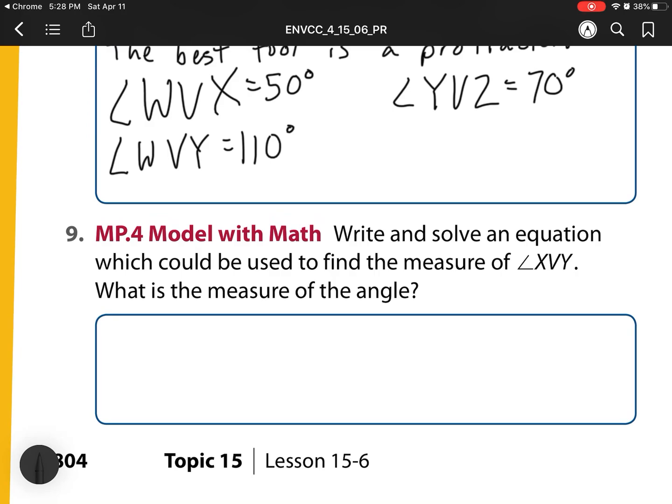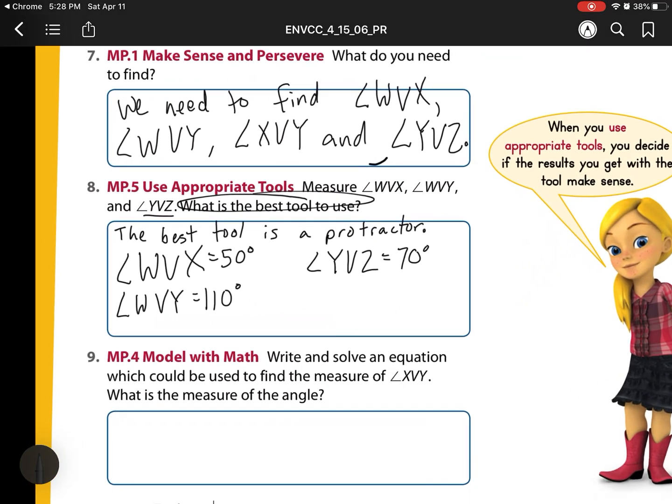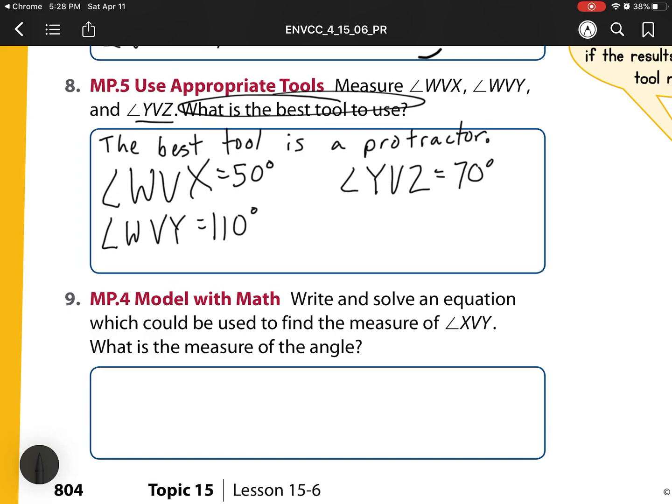Write and solve an equation which could be used to find the measure of XVY. So that's this angle right here, XVY. What is that missing angle? What is the measure of the angle? Well, we can use D for our variable for degrees, or we can use A for angle. I'm going to use D for my equation.